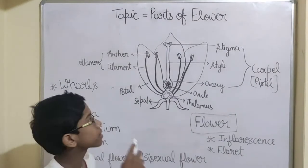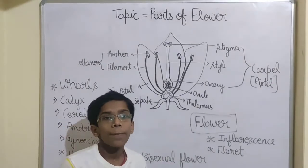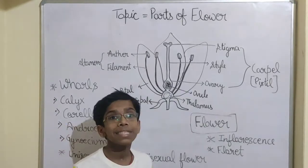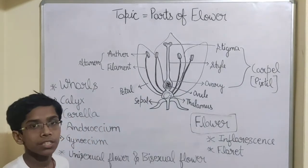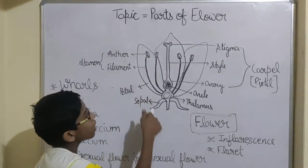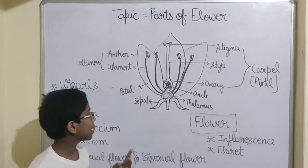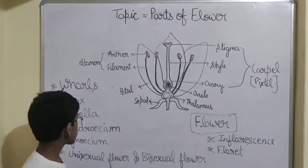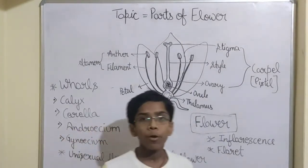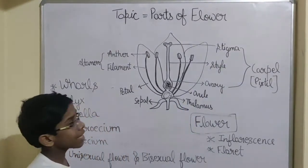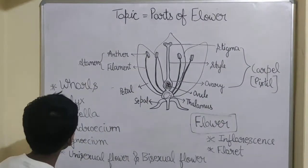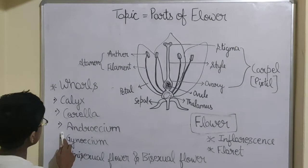The petals have colors and they attract insects for pollination. So there are two functions of petals: the first one is that it protects the androecium and gynoecium, the reproductive whorls; and the second one is that it attracts insects for pollination.